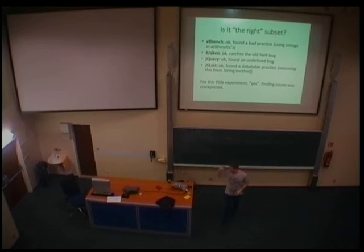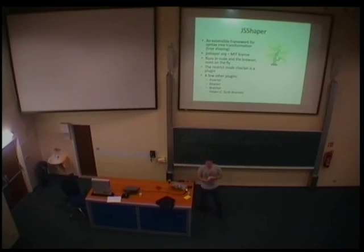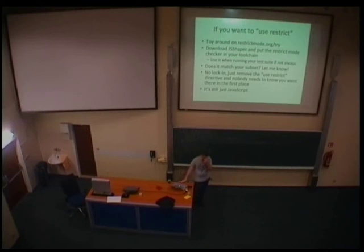So restrict mode works under the hood by a framework called JSShaper. It's a source-to-source translation engine for JavaScript that I wrote a year and a half ago. MIT licensed on jshaper.org and GitHub, so you can go and play with it. It runs in the browser. It runs in node. You can run on the fly in the browser even, but I would recommend it to include in your toolchain and just execute it using node. So if you want to use restrict, go to that webpage, download JSShaper, put it in your toolchain. If you don't want to use it all the time when you're running your program, perhaps you are one of those guys that hate the toolchains, at least consider using it before running your test suite, because that's going to take a while anyway. So run it, you know, run translated test suite. It doesn't cost you anything. There's no lock-in. You can just remove use restrict. Nobody needs to know you used it in the first place, because it's still just JavaScript.